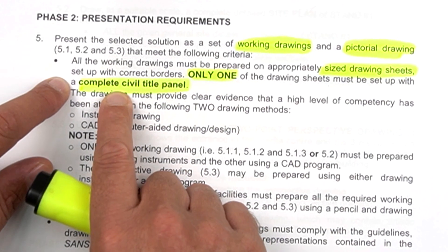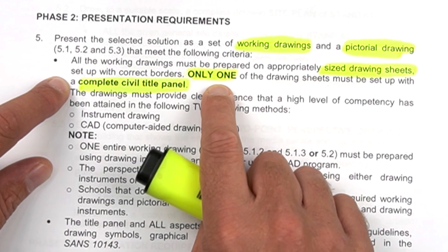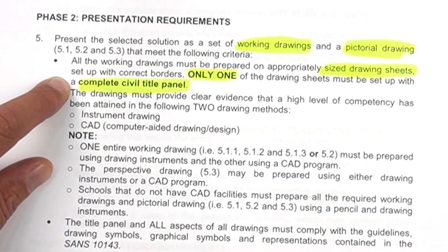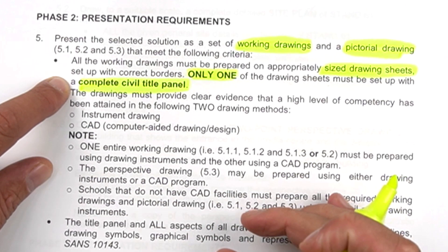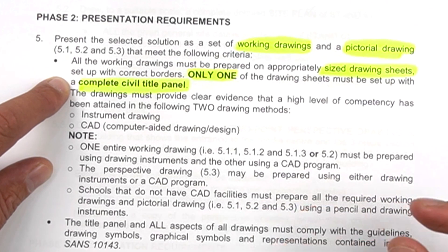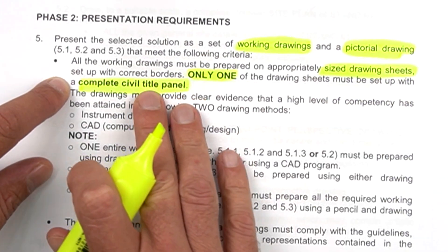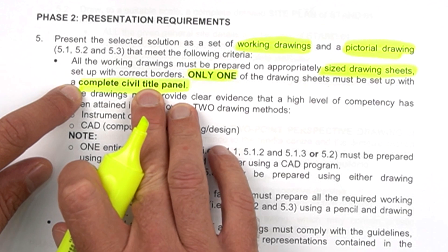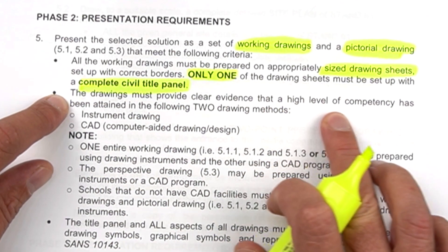I'm going to detail in this video how that civil title panel looks. Of course, it's only the first one that needs the complete panel — the rest still need to have the border with your name, your page number, date of completion, and the title of the drawing. But the first one will have the complete title panel.